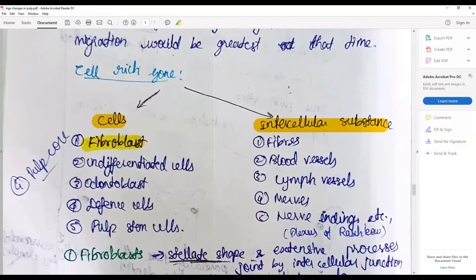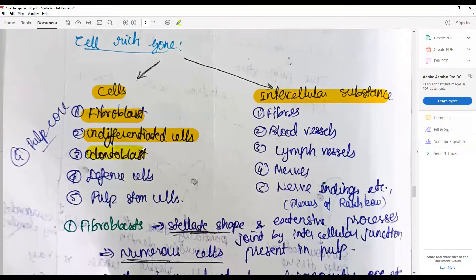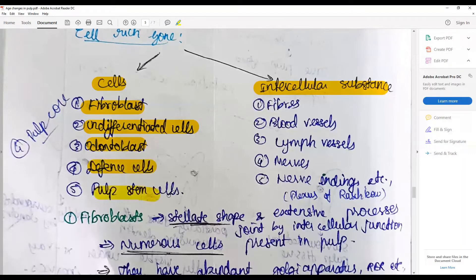The cells include the ubiquitous fibroblasts, which are the most numerous cells, a large number of undifferentiated mesenchymal cells, odontoblasts, defense cells, and pulp stem cells. The intracellular substance is made up of fibers, mostly collagen secreted by the fibroblasts.